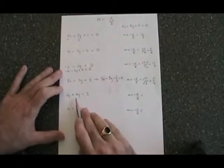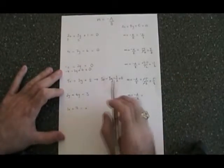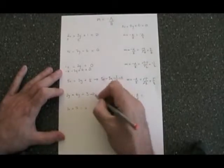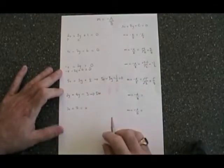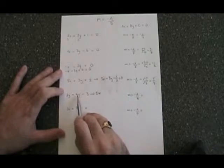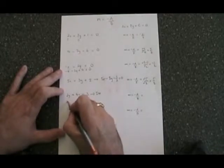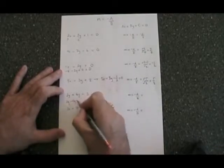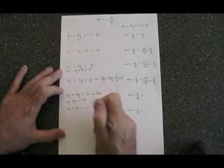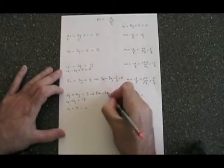Here we have an equation that doesn't have an x, but we can still do this trick. We have to realize if there's no x, we're allowed to write zero x. The four y moving to the other side becomes negative four y. And two y minus four y is negative two y.